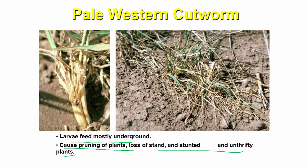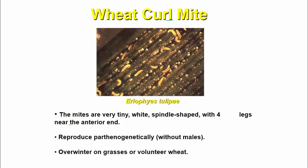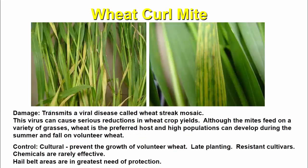The western cut mite is a tiny white spindle-shaped mite with 4 legs near the anterior end. It reproduces parthenogenetically without males and overwinters on grasses and volunteer weeds. Control includes prevention of volunteer weed growth, late planting, and resistance cultivars. Chemicals are rarely effective. Hail belt areas are in greatest need of protection.